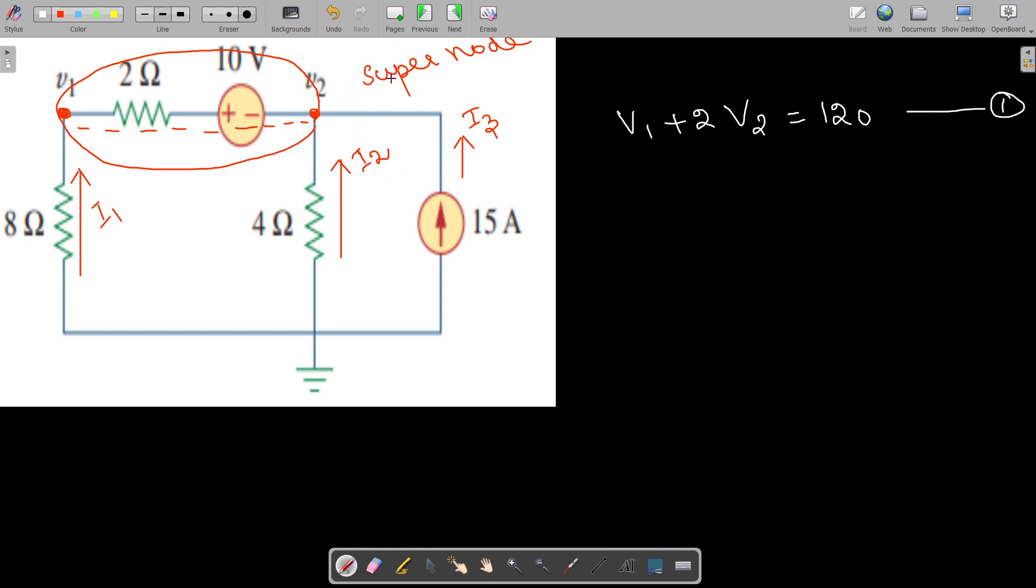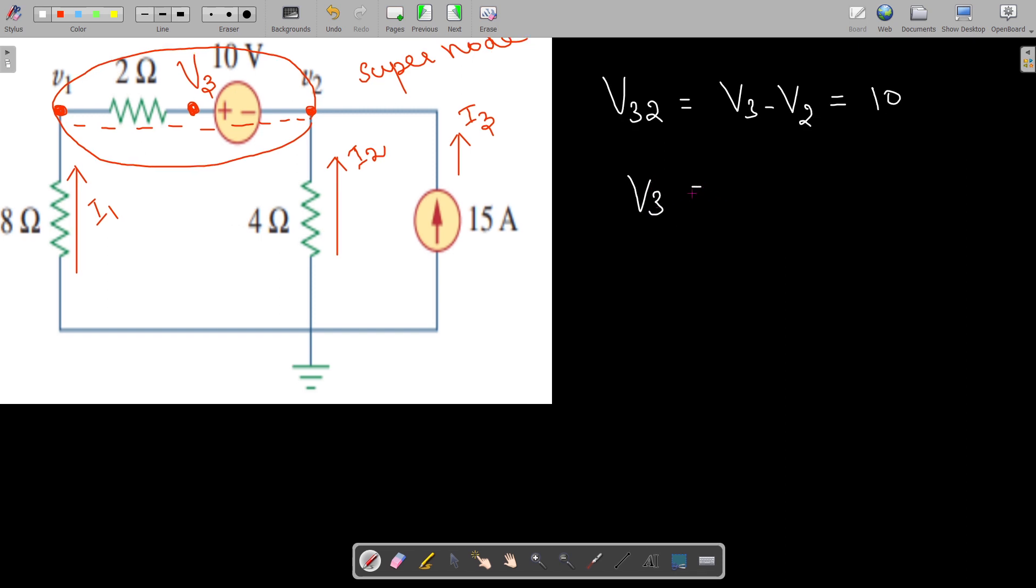Since it is a super node, we have to write the potential difference as an equation. So we need to find out what is available here. If I take this as some v3 potential, then I can write v32, that is v3 - v2 = 10, so v3 = v2 + 10.